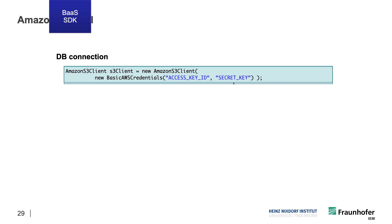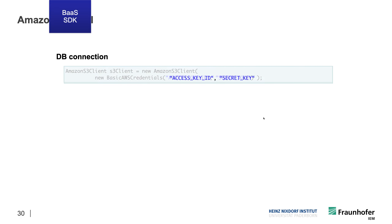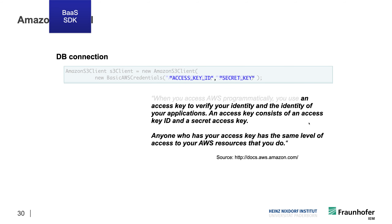Unfortunately these insecure APIs existed, and some of them still exist today. Of course, if programmers are lazy, don't have the time, or don't know better, they would choose the insecure API first. The AWS documentation says: when you access AWS programmatically you use an access key to verify your identity. An access key consists of an access key ID and a secret access key. Anyone who has your access key has the same level of access to your AWS resources that you do — though this warning is not very explicit. They should really say don't use this API.